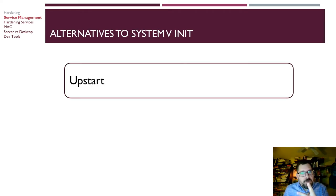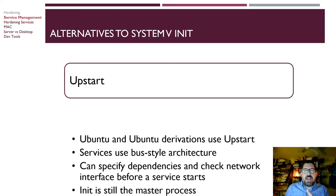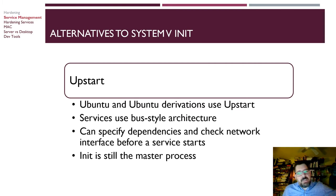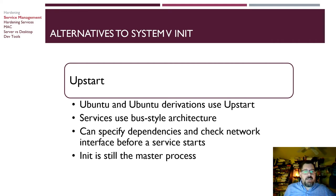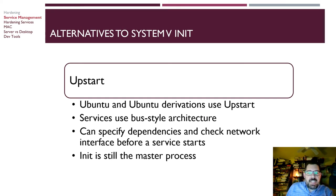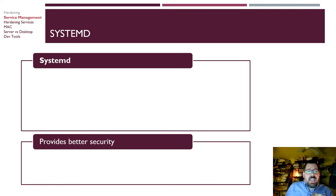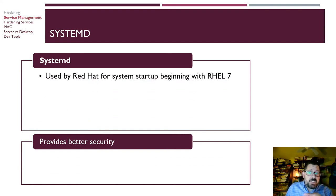There are two major alternatives to System V init. One is Upstart, mostly used in Debian derivatives, until 2015. I think you'd be hard pressed to find systems still using Upstart — almost everyone has transitioned to SystemD. Upstart still uses init as the master process; I kind of think of it as just another suite of utilities for init. The other option is SystemD, which we've already used in this class because SystemD is the default for Red Hat and was actually developed by Red Hat.